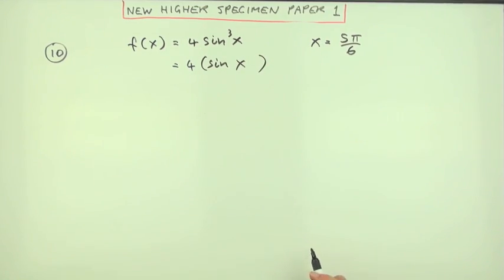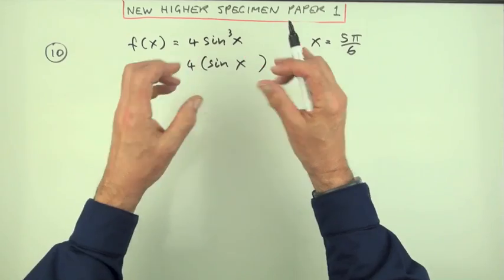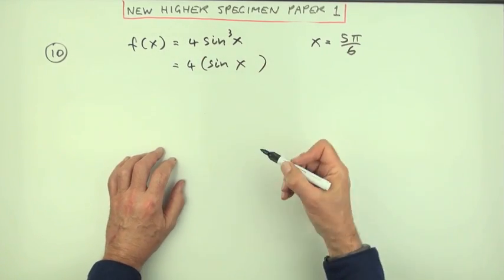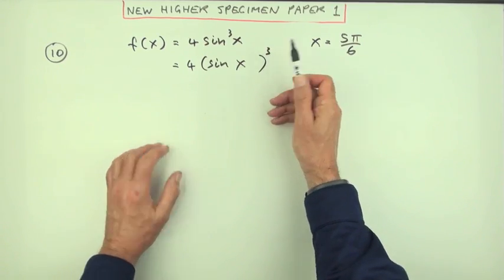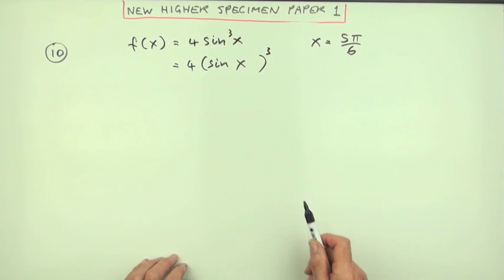Whenever you've got a function of a function there should be something operating on something, like the question of function of a function, so you can quite clearly see what the function is and what it's acting on.